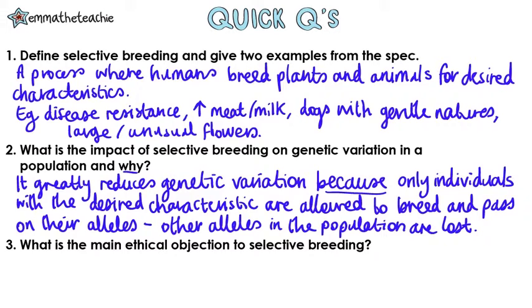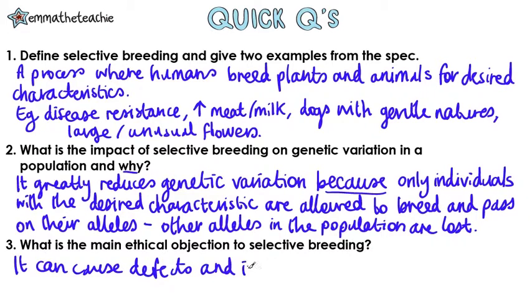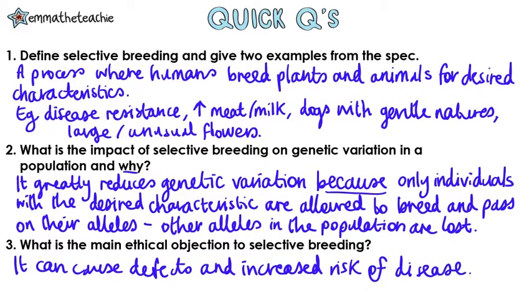What is the main ethical objection to selective breeding? It can cause defects and an increased risk of disease in some animals.